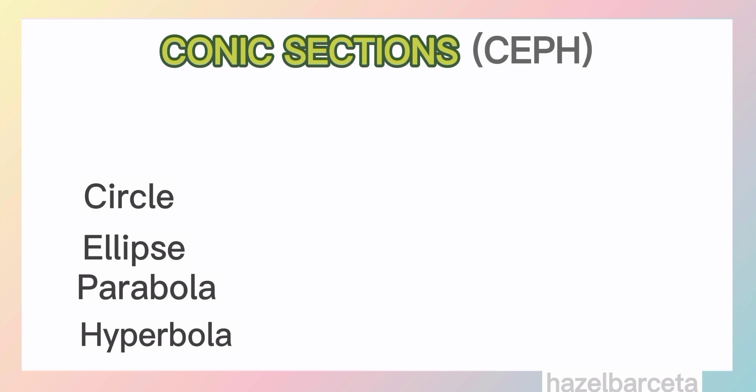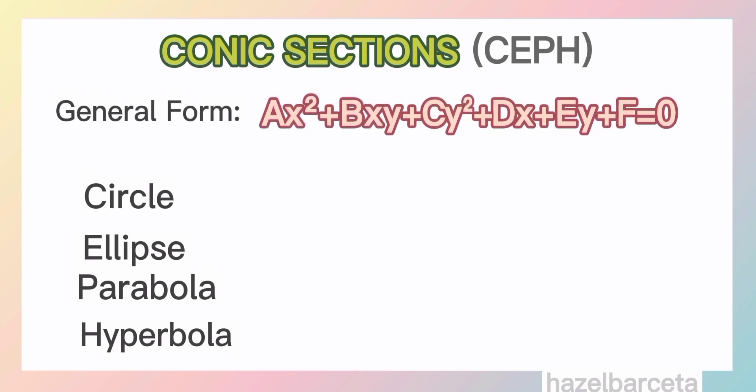And we have our general form: AX squared plus BXY plus CY squared plus DX plus EY plus F is equal to zero, where F is the constant. So using the general form,